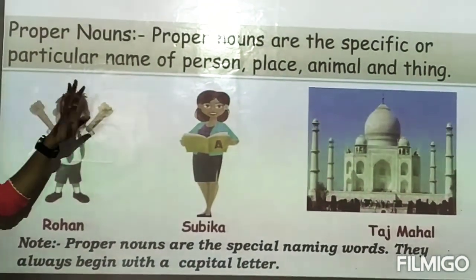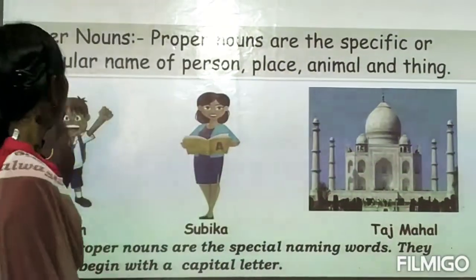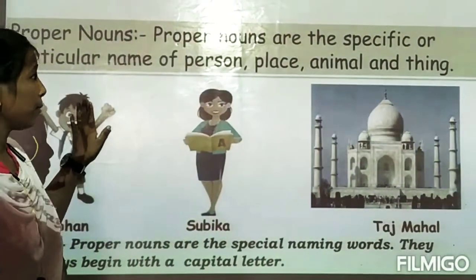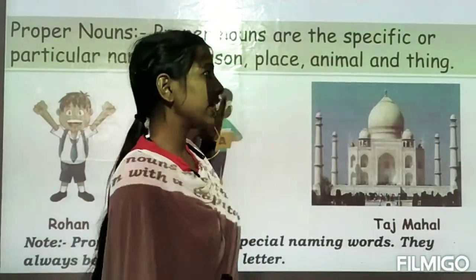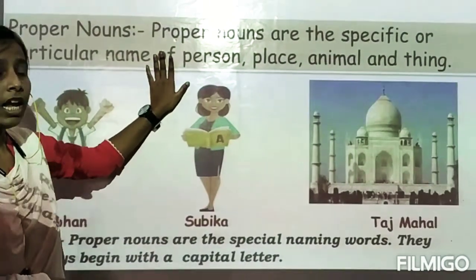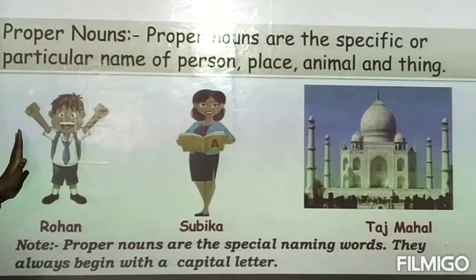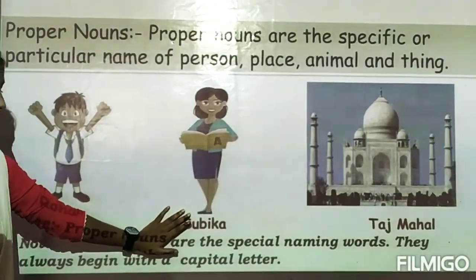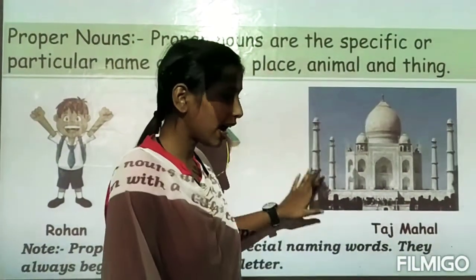Next is proper noun. A proper noun is a specific and particular name of a person, place, animal, or thing. For example, 'Rohan' is a boy — but 'Rohan' is a special, particular name, so it is a proper noun. 'Subica' is a particular person's name. 'Taj' refers to a monument — it is a special name, so it is a proper noun.